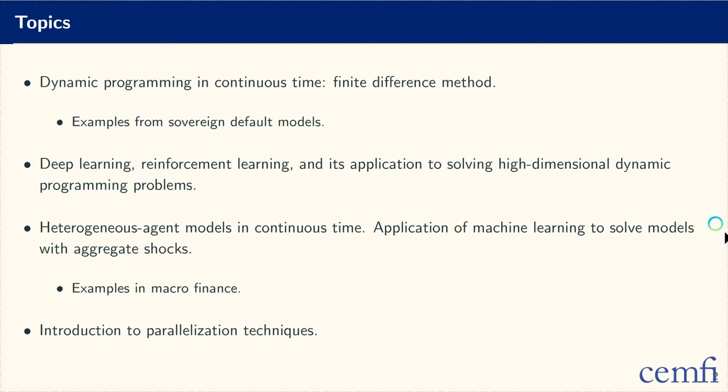Therefore, we have designed this course to cover some of these ideas. First, we will introduce dynamic programming in continuous time, so we will all get familiar with the basic ideas of continuous time macro. We will start with the finite difference method as a solution method, because it is the simplest way to do so and because it will help us understand some of the main issues later on. We will have examples illustrating this solution method from sovereign default models. Next, we will move into deep learning, reinforcement learning, and its application to solving high-dimensional dynamic programming models.